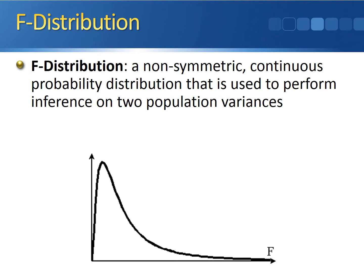The F-distribution is a non-symmetric, continuous probability distribution that's used to perform inference on two population variances.